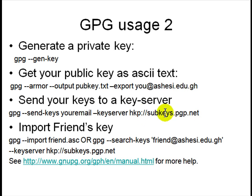This server may change, so you may have to look on Google to find what the current server is. For example, MIT has a key server where you can publish your public keys. If your friend sends you an ASCII key, you can import it into your home directory's .gnupg folder. Or you can search using GPG for your friend's email ID on a key server. Be careful though — when you get a key from a key server, you are not really guaranteed it is your friend's key, so we will see how to figure that out.